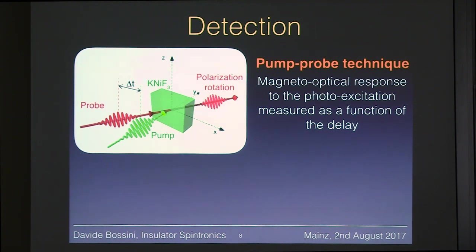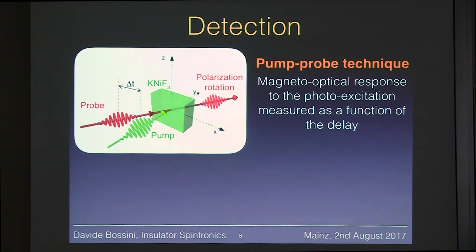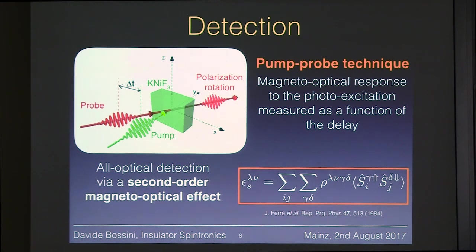To measure spin dynamics we rely on magneto-optics. There is a common belief that only the Faraday effect and the Kerr effect exist, but actually there is a plethora of higher-order magneto-optical effects. In this case, we cannot use Faraday rotation or the Kerr effect, because these are linear in the spin deviation, whereas our process is delta S=0, not delta S=1. We therefore use quadratic magneto-optical effects — specifically, an effect proportional to spins on both sublattices simultaneously.